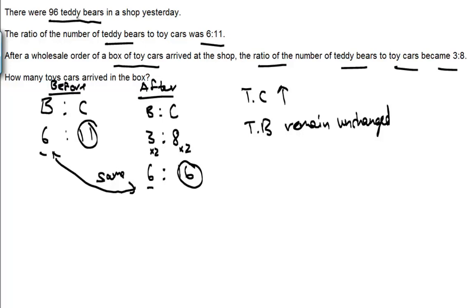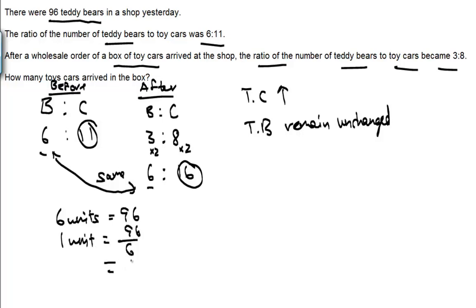We know there are 96 teddy bears in the shop yesterday, so these 6 units equal 96 items. Therefore, one unit is equal to 96 divided by 6, which equals 16 items.